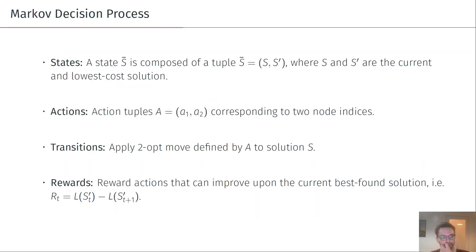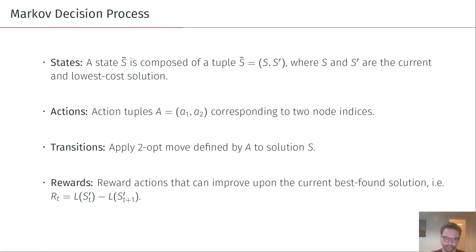In the proposed method, the first step was to define the problem as an MDP — a Markov decision process. We model the states as the current solution and the current lowest cost solution seen during the search. The actions are tuples corresponding to two node indices, and the transitions apply these actions and perform a 2-opt move on a solution. Rewards are attributed to actions that improve upon the best found solution.